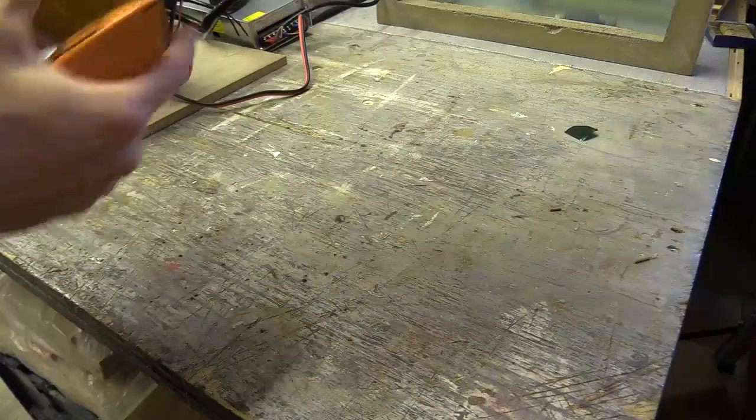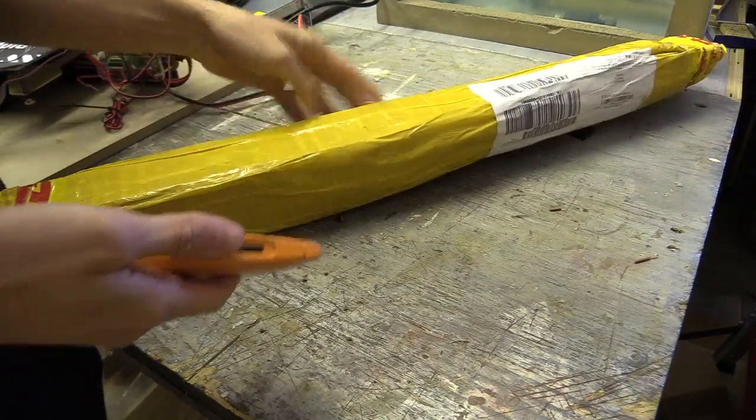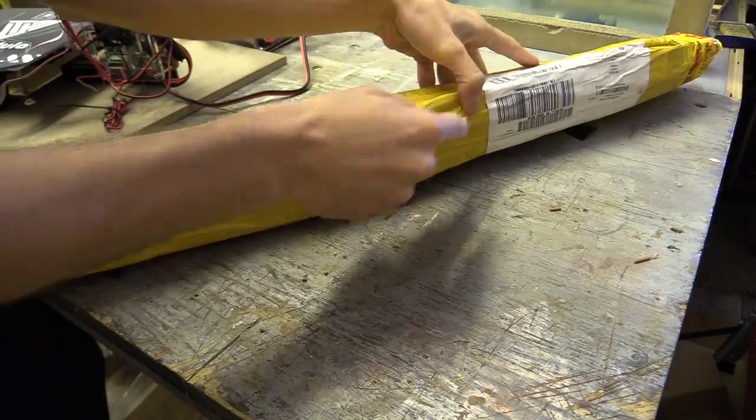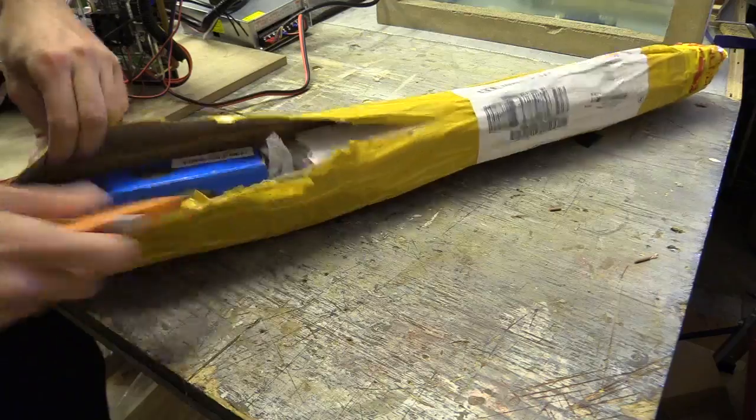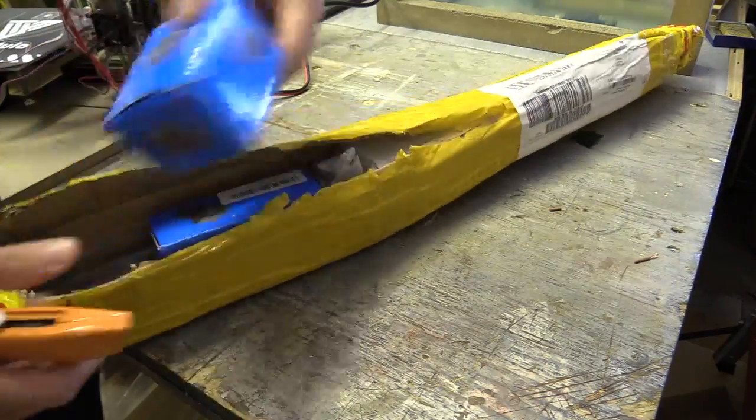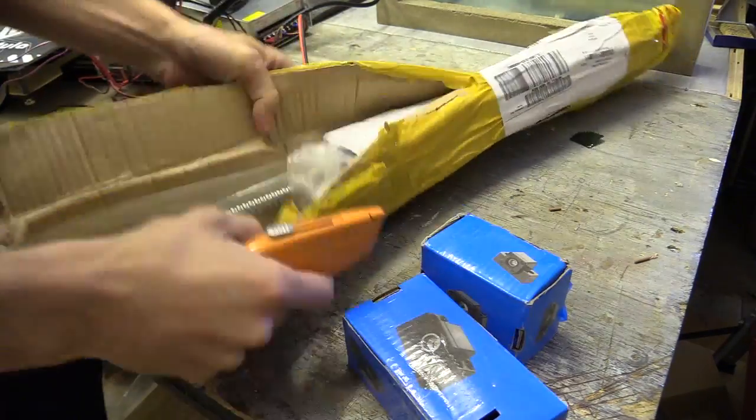So I've been sent some CNC components from Banggood. I'm just unboxing them. They are a 750mm SFU 1605 ballscrew with BK12 and BF12 bearing end supports.